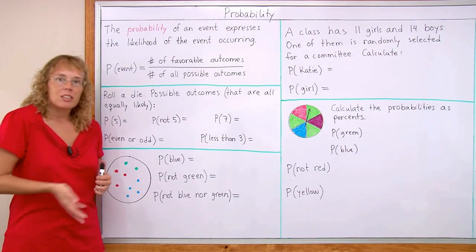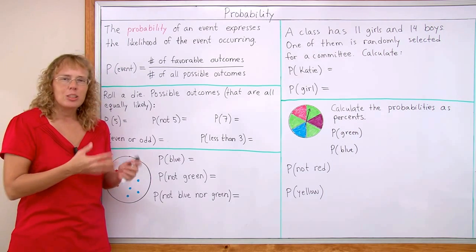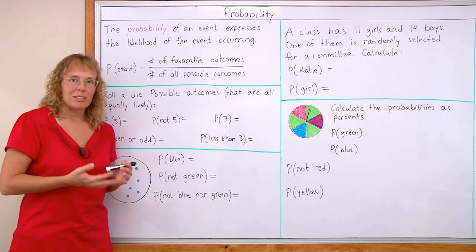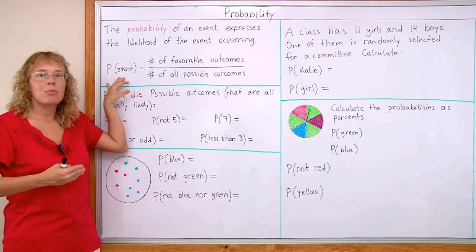For example, if you roll a die, then to get one or two or three or four or five or six, each one of those are equally likely to happen, right? And so then we have this simple formula for calculating the probabilities.